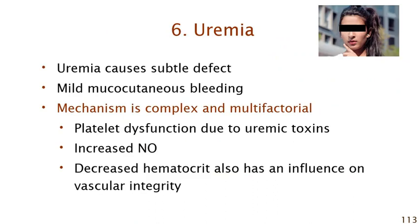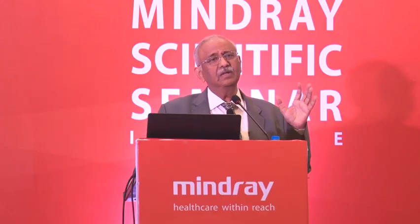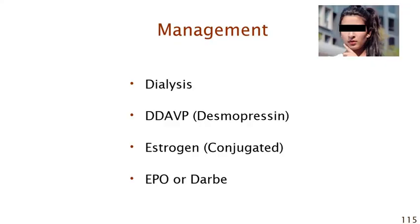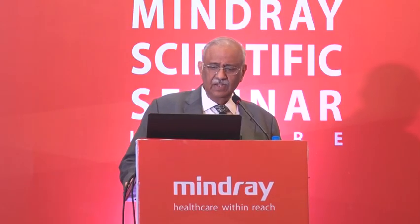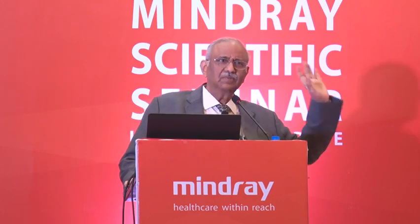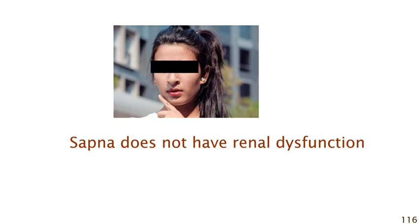Uremia causes subtle, mild mucocutaneous bleeding. The mechanism is complex and less well understood — uremic toxins can cause platelet dysfunction, nitric oxide accumulates, and a lowered hematocrit damages vascular integrity. Treatment is best achieved by dialysis to remove uremic toxins; desmopressin is supposed to be effective; conjugated estrogen is also reported to work. In practice, this is not a major issue. Sapna's creatinine is normal, so uremia is not relevant.